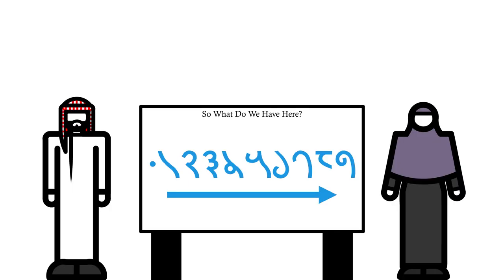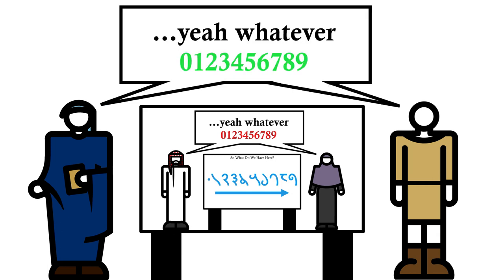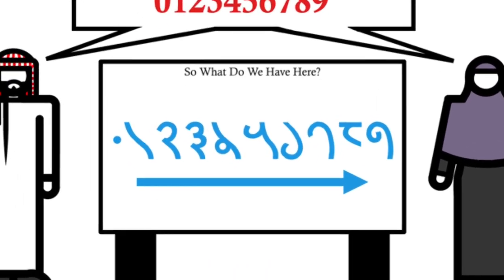So what do we have here? The Arabs took this Indian system and decided not to switch the direction around, and the Europeans took the Arabic system and once again didn't switch the direction. Which means that numbers written like they are in Latin or Cyrillic scripts are really being used, accidentally, as they were originally intended, over 2000 years ago.